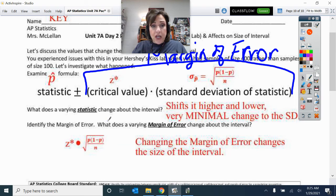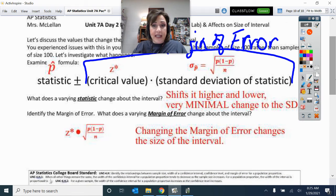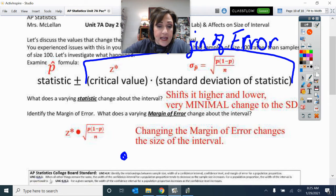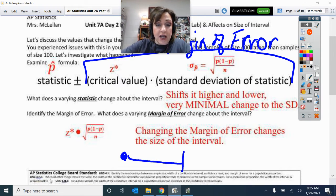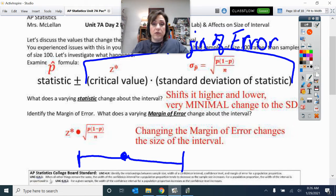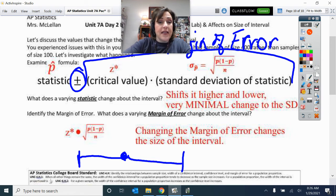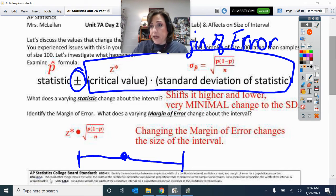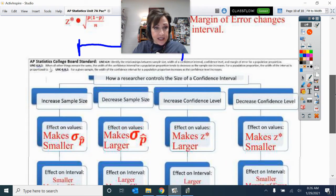Identify the margin of error. What does the varying margin of error change about the interval? Here is the margin of error, that critical value times the standard deviation or standard error. Changing the margin of error, since that's your whisker, here's your P hat. Changing the margin of error will change the size of this whisker that is going down or above. You are adding or subtracting this margin of error.